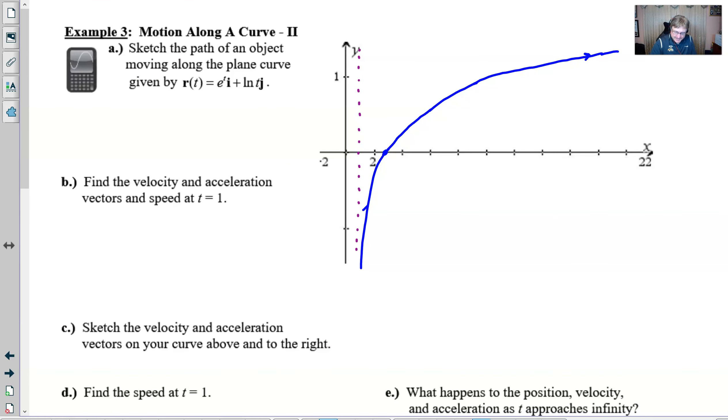Part B asks to find the velocity and acceleration vectors, and I'm going to strike speed because we're doing that in part D. For the velocity vector, we take the derivative which is e to the t times i plus 1 over t times j. The velocity at time one is e to the first times i plus 1 over 1 which is 1 times j.